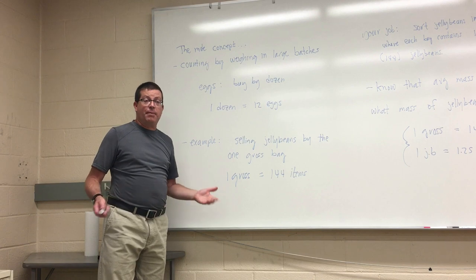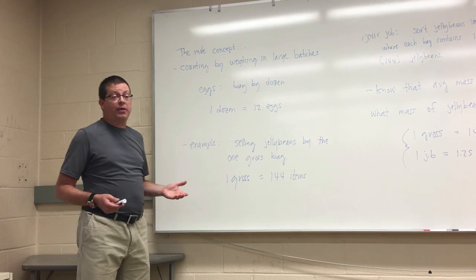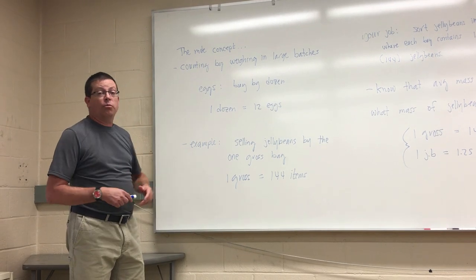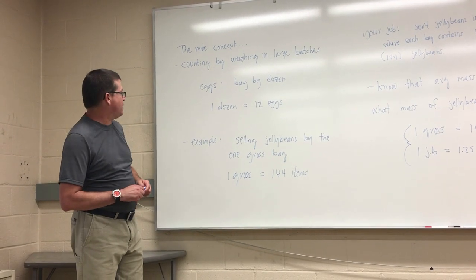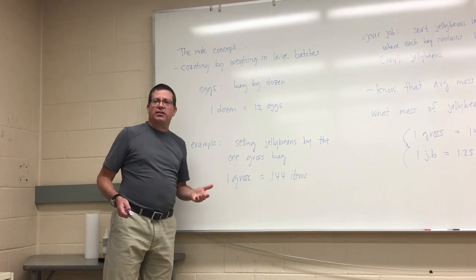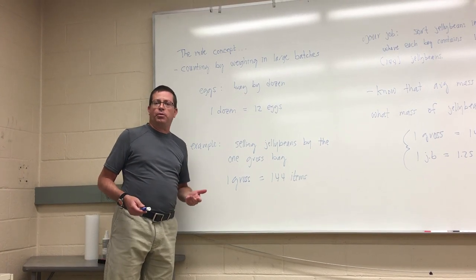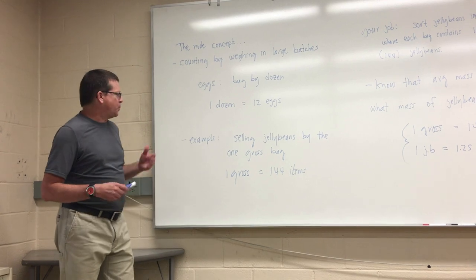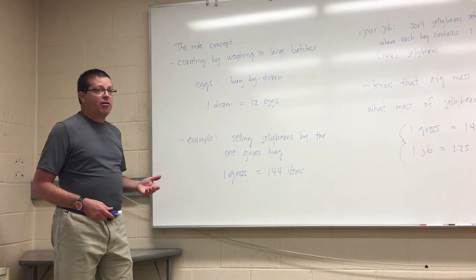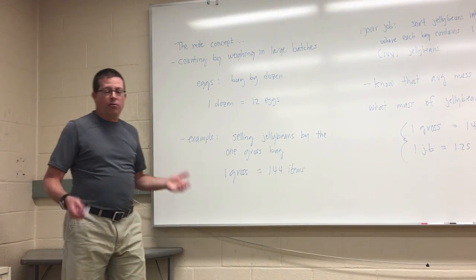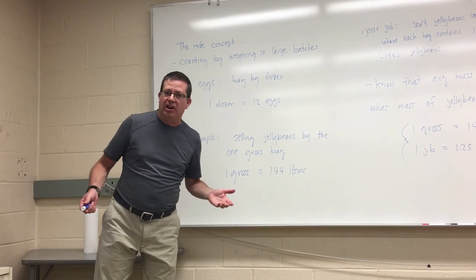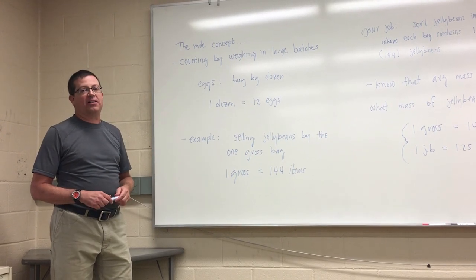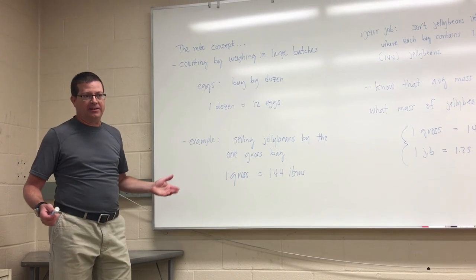A dozen is a counting or grouping unit. One dozen eggs — or whatever else — is essentially a unit that suggests we have 12 of those items. That's an example of how we group things to buy them, sell them, use them, whatever the case may be. So let's look at a slightly more complex example. Let's put together a scenario where we happen to work in a candy shop that specializes in selling jelly beans.